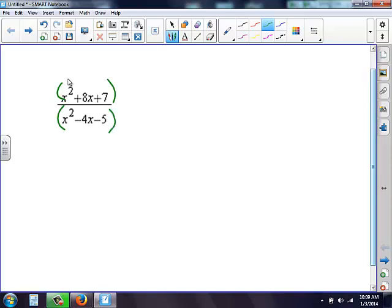So now I'm looking at the top and the bottom separately to simplify. So I look at this top. I can't pull anything out, but I can make two parentheses. I put an x and an x. My factors of 7 are 1 times 7. My goal is to get a positive 8. So they both have to be positive. So I need to have a plus 1 and a plus 7.